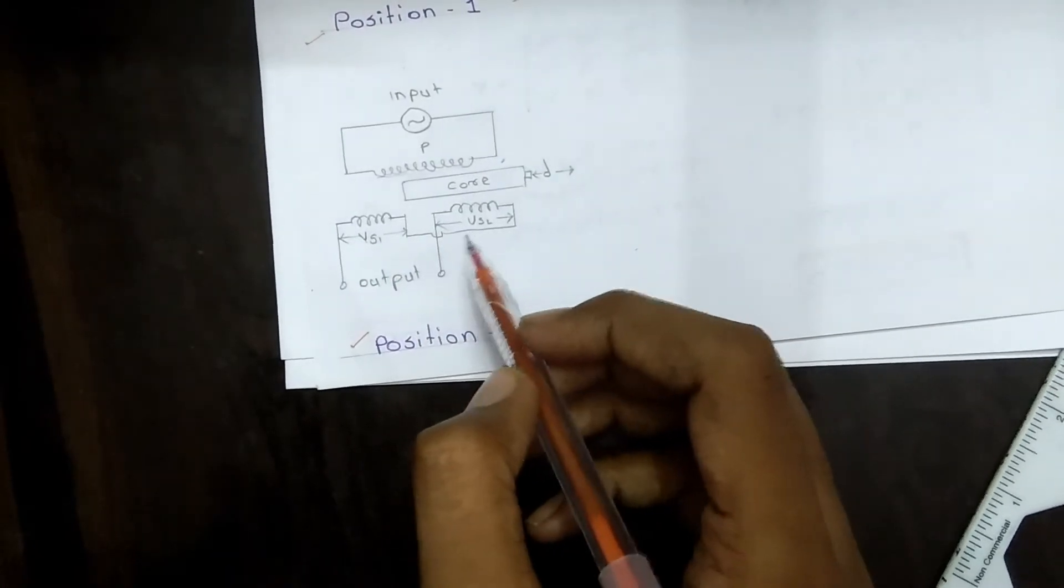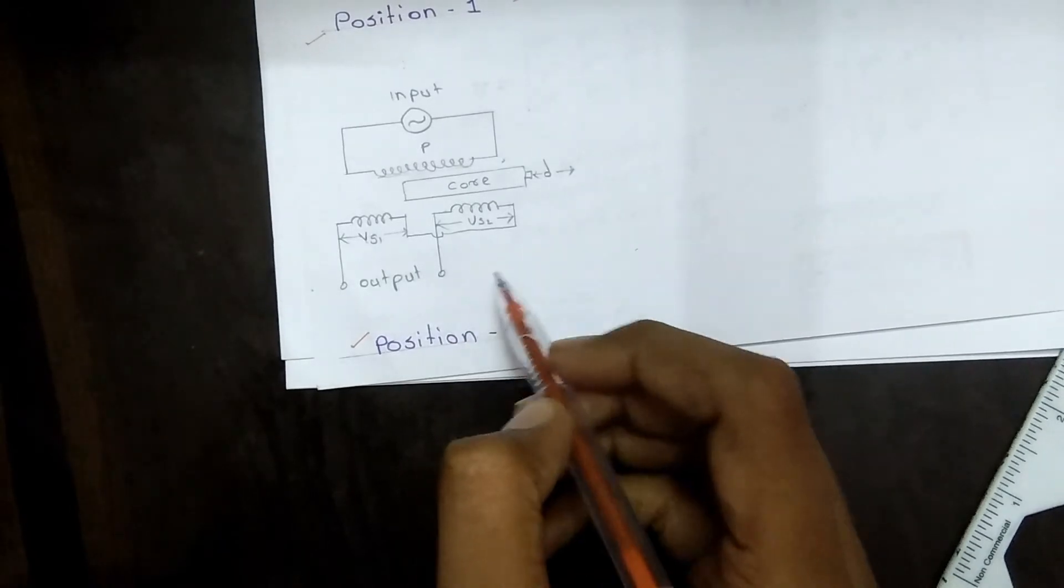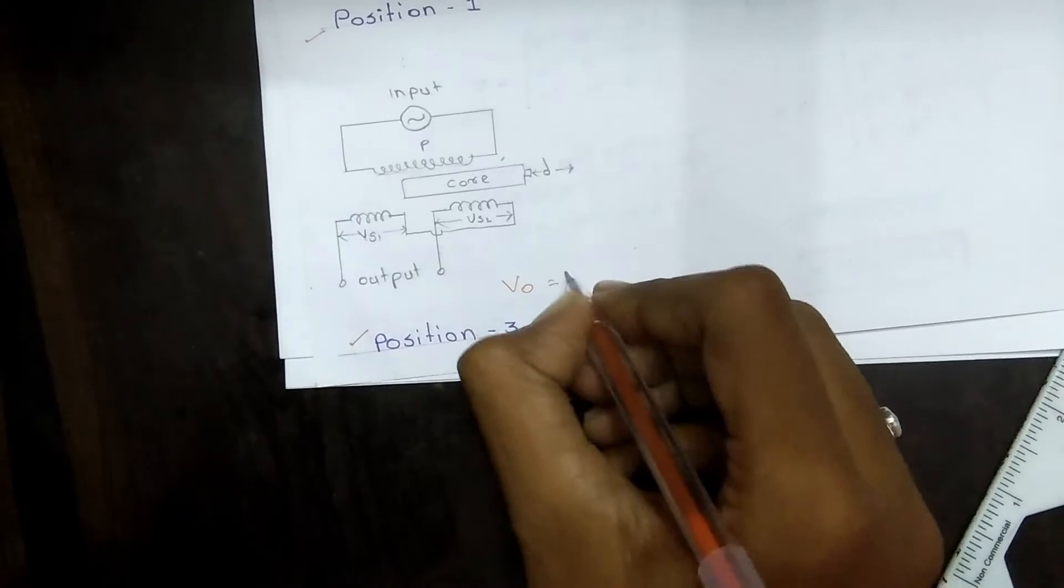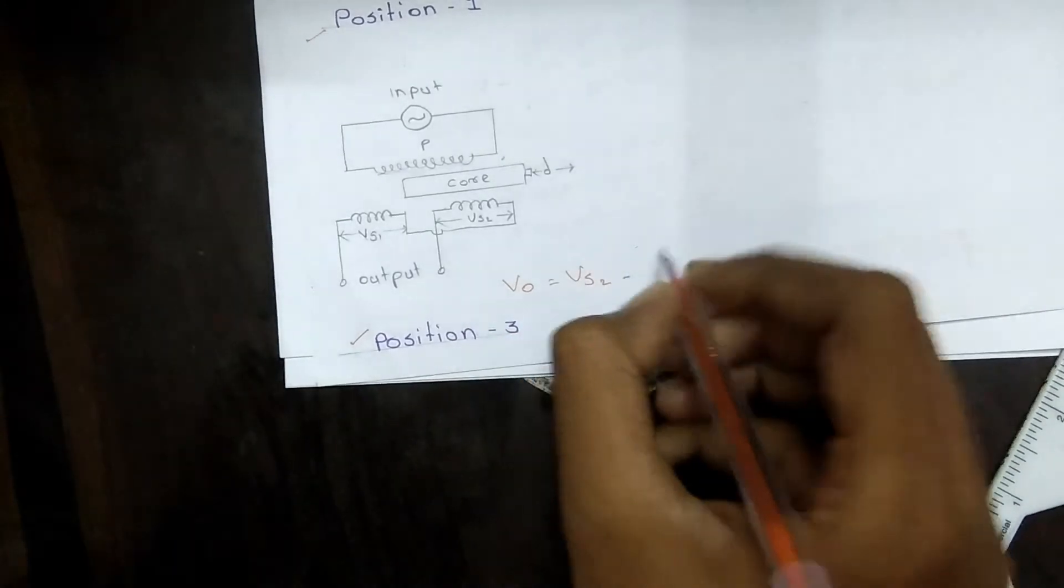Hence, the output voltage in the third position is VO = VS2 - VS1.